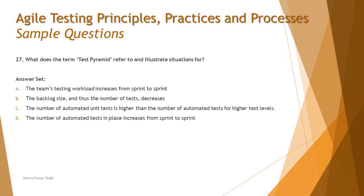Option A says: the team's testing workload increases from sprint to sprint. The test pyramid represents doing more automation and more testing in the initial part of the lifecycle — more unit testing compared to system and acceptance testing. The workload per sprint has nothing to do with the test pyramid; the concept is about where you put more effort across testing levels and automation versus manual.